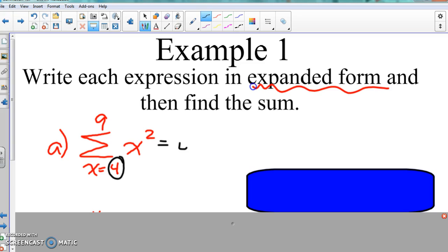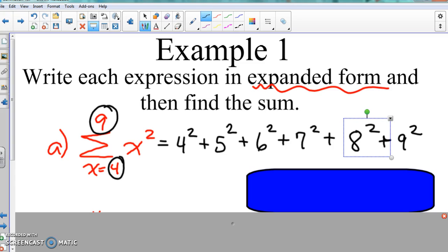So if we start off with that bottom number, it means we're going to do 4 squared. 4 squared. And plus, the next number is 5, the next number is 6, the next number is 7. So all the way until we get to number 9.